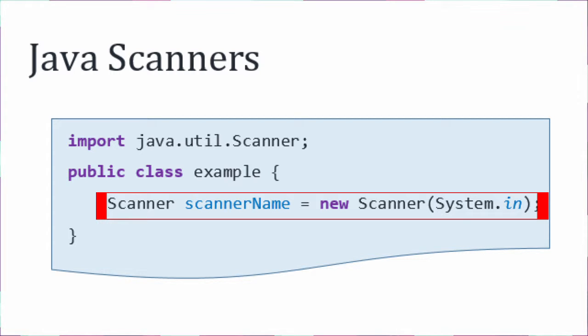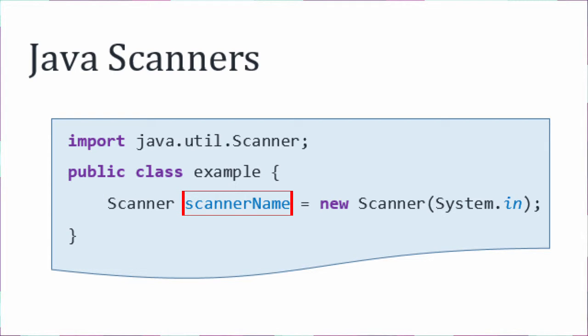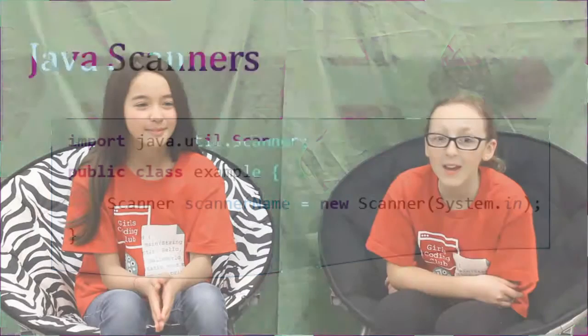This line is a bit confusing, so we'll talk about the parts of it. The first word, scanner, means we're making a new variable and its type is scanner, instead of something like int or string. Right after is the name of the variable, same as always.